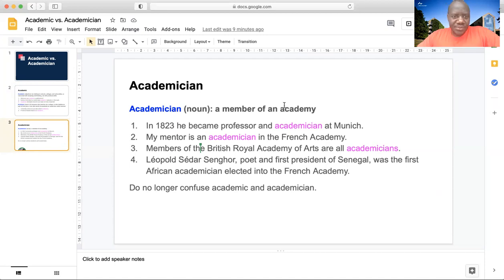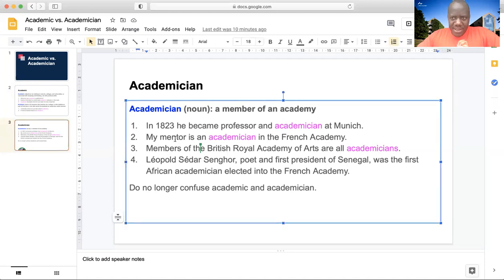So, that being said, if someone is a member of an academy, like the academies I just mentioned, you will now call him an academician. So, look at the example number one carefully. In 1823, he became professor and academician at Munich.